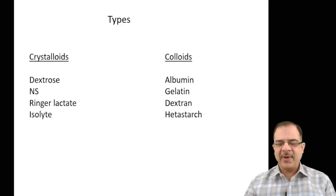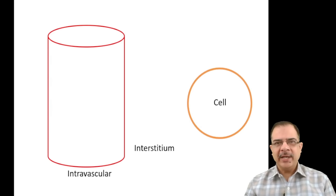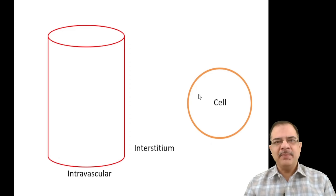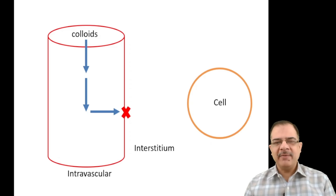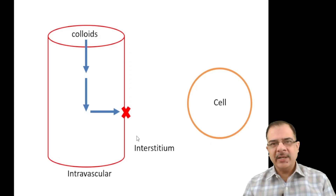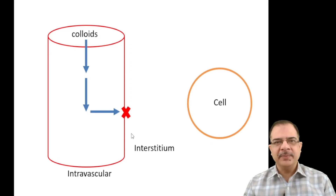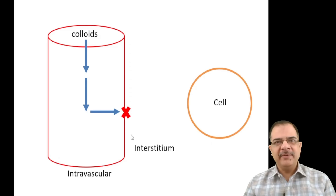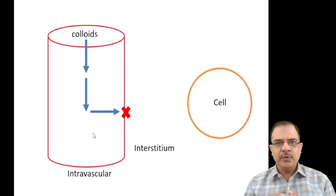There are three compartments of the body: intravascular, interstitium (both forming the extracellular compartment), and the intracellular compartment. Colloids remain within the intravascular space — they do not cross the vessel wall into the interstitium when blood vessel permeability is normal. If permeability is increased, they may cross. So colloids are useful when we want to expand intravascular volume.